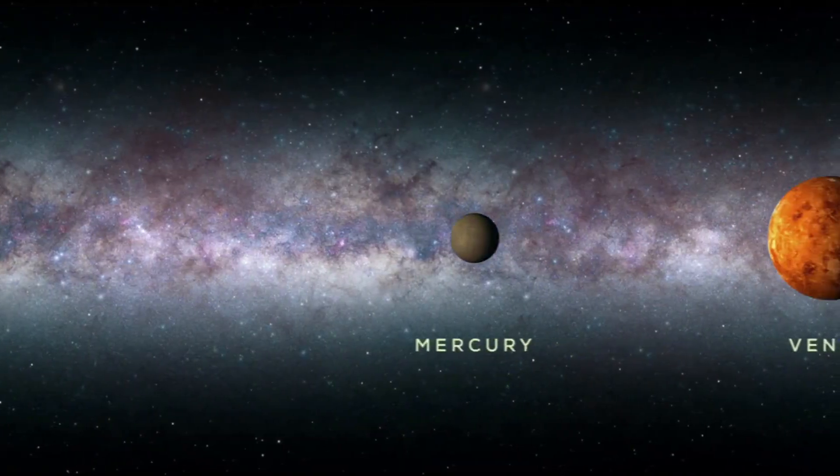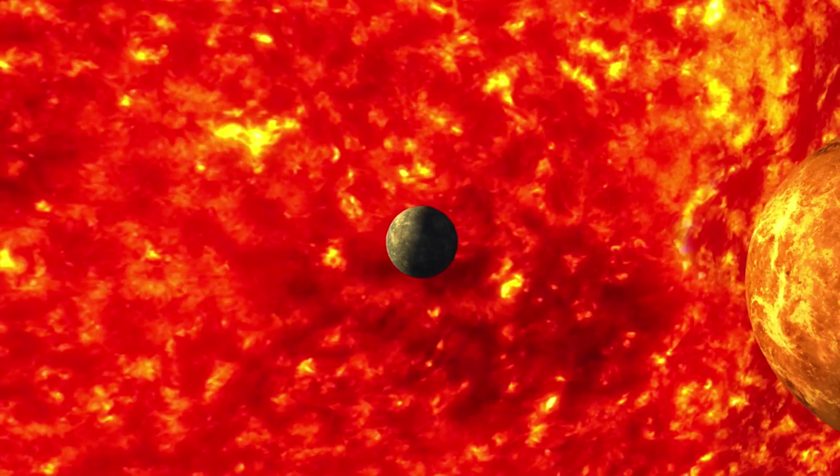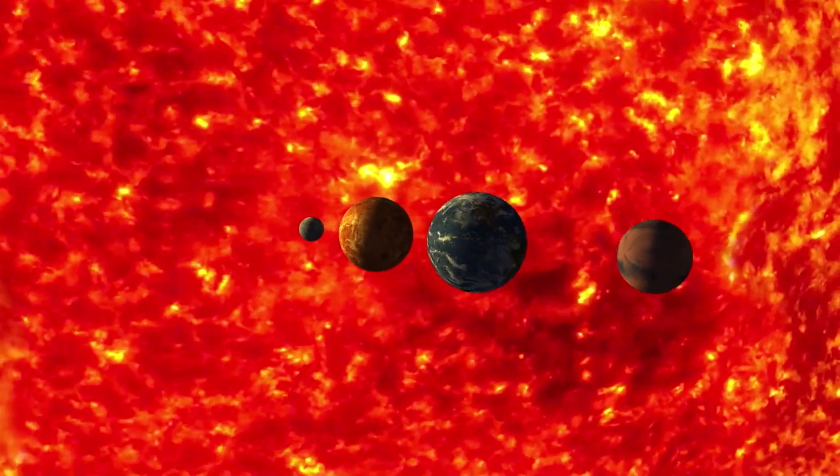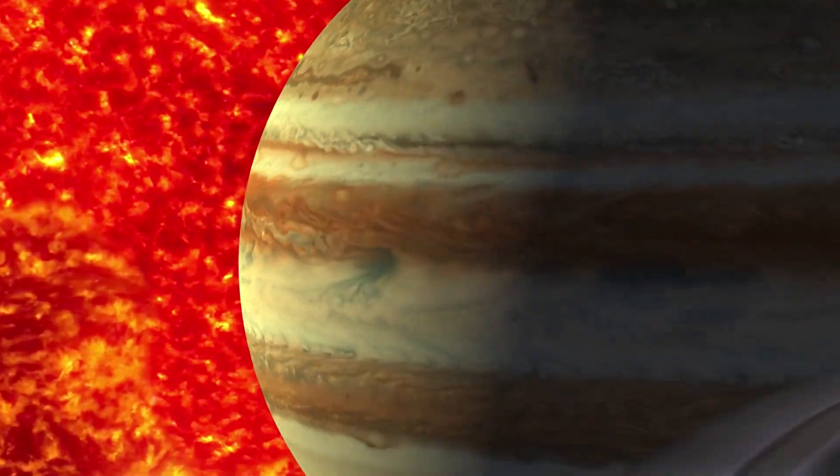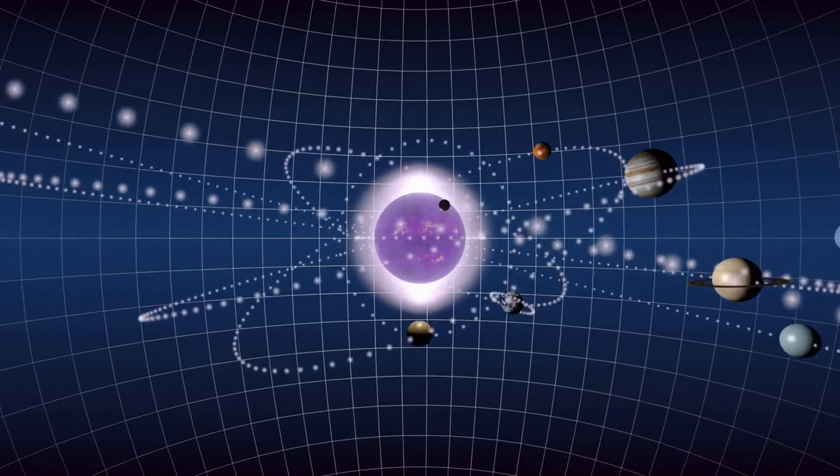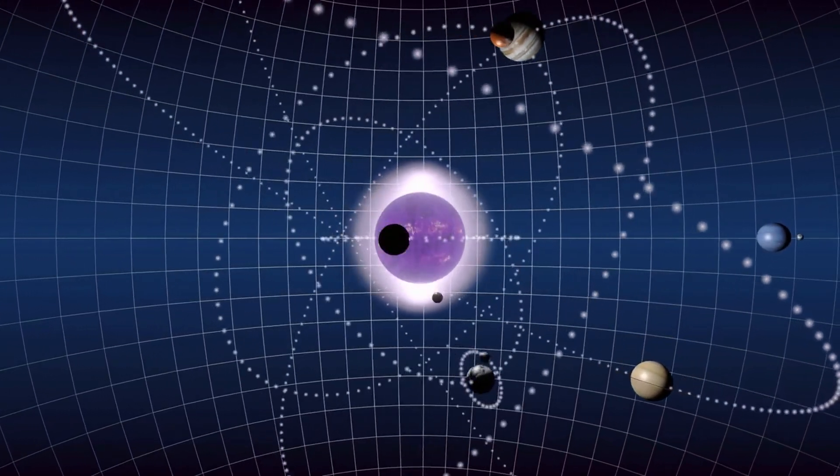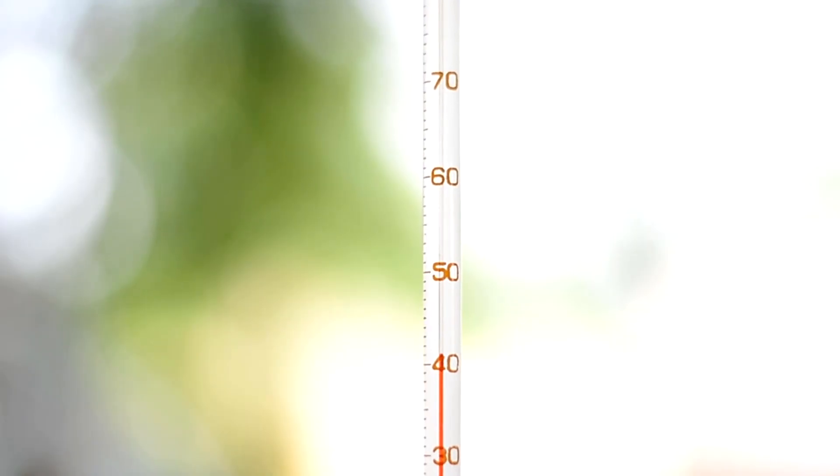Betelgeuse's size is almost beyond comprehension. If placed at the center of our solar system, its surface would extend beyond Jupiter's orbit. That means it would swallow Mercury, Venus, Earth, Mars, and the asteroid belt whole. Even with such an enormous size, its surface is surprisingly cool, around 3,500 Kelvin, much cooler than the Sun's 5,500 Kelvin. This is why it glows that deep, haunting red, the color of dying fire.